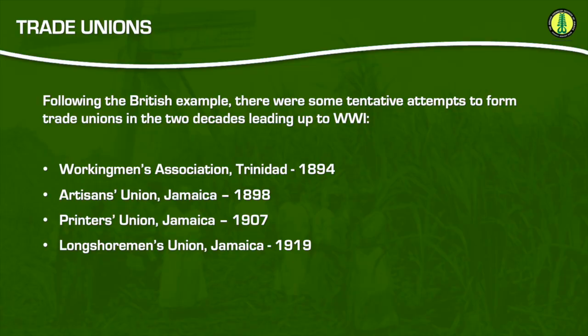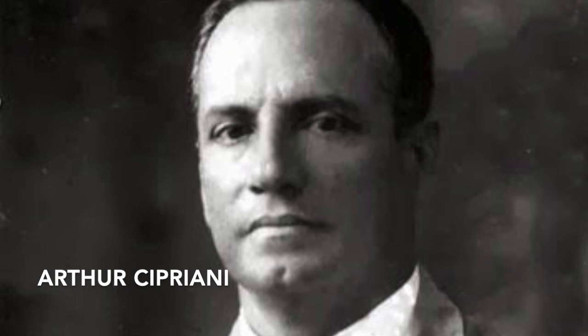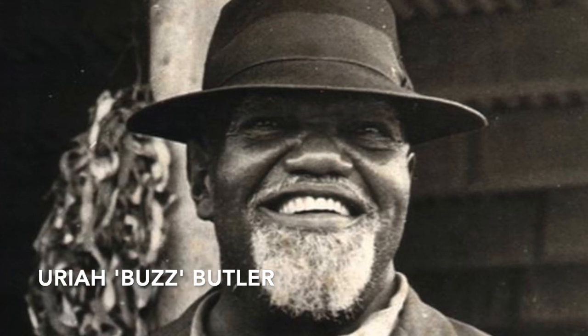The early response of the working class to their low wages and bad working conditions was work stoppages or strikes. This sometimes included the sabotage of estate equipment and fields, as well as the occasional riot. In general, however, these actions were spontaneous, unorganized, and ineffective. There were some tentative attempts to form trade unions in the two decades leading up to World War I, and this saw the rise of trade union leaders across the Caribbean like Arthur Cipriani of Trinidad, who revived the Trinidad Working Men's Association in 1919 and secured for dock workers improvements in working conditions like an eight-hour workday, a workman's compensation law, and the establishment of an agricultural bank. Uriah Buzz Butler in Trinidad, Hubert Critchlow in British Guiana, and Clement Payne in Barbados were some of the other important labor leaders at this time.